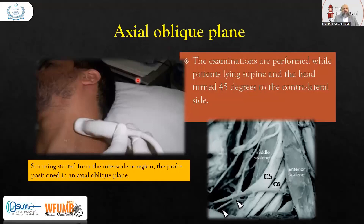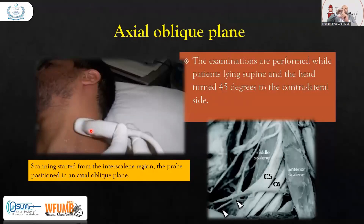This is how we start performing the scan. Here is the patient's head and neck — the head is rotated towards the right side, and we are scanning from the left. Scanning starts from the interscalene region in the scalene muscles. The probe position is in an axial oblique plane — transversely placed but slightly oblique. The examinations are performed with the patient lying supine, with the head turned 45 degrees to the contralateral side.